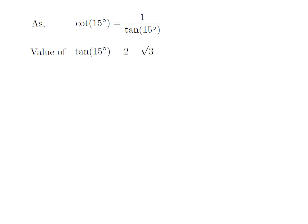To find the value of cotangent of 15 degrees, we have to find the value of tangent of 15 degrees. How to find the value of tangent of 15 degrees has been explained in the video appearing in the upper right corner. The URL of the video has been mentioned in the description section. Following the steps given in the mentioned video gives us the value of tangent of 15 degrees is equal to 2 minus square root of 3.